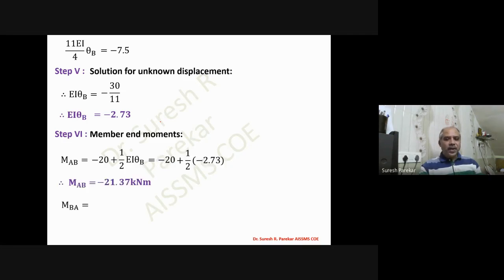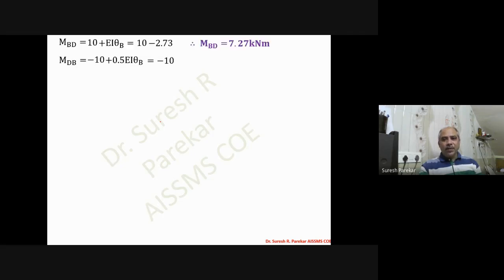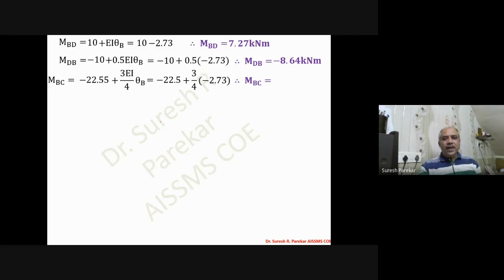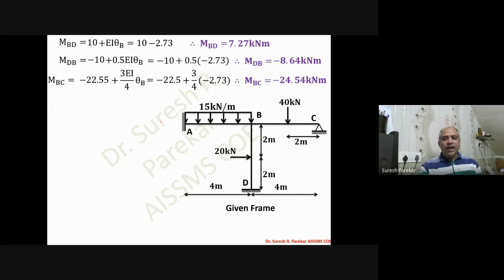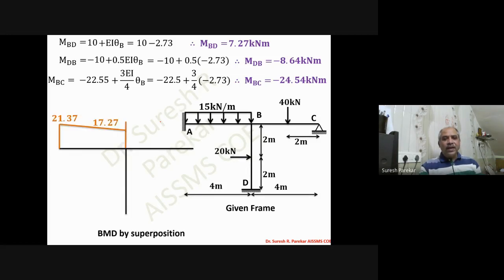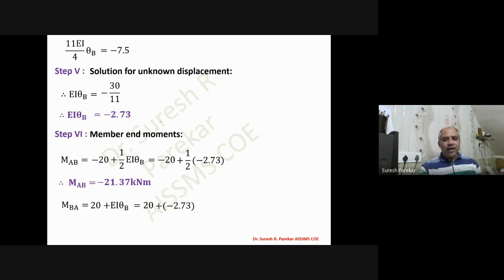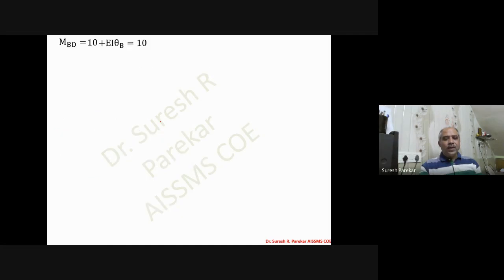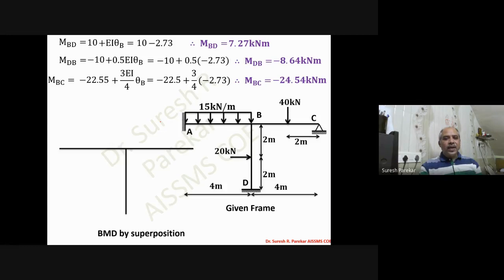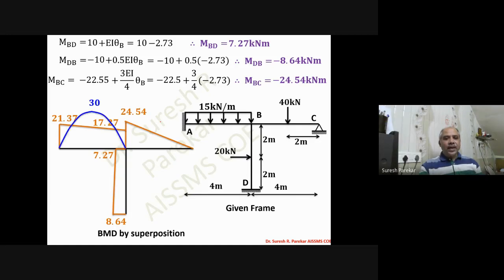Substituting EI·theta_B = -2.7 into equations one through five gives the final moments: M_AB = -21.73, M_BA = 17.27, M_BD = 7.27, M_DB = -8.64, M_BC = -24.52 kN·m. The BMD is drawn showing -21.37 and 17.27 for AB. The simply supported moments are wL²/8 = 30 for AB, wL/4 = 40 for BC, and wL/4 = 20 for BD. The final BMD is obtained by superposition.